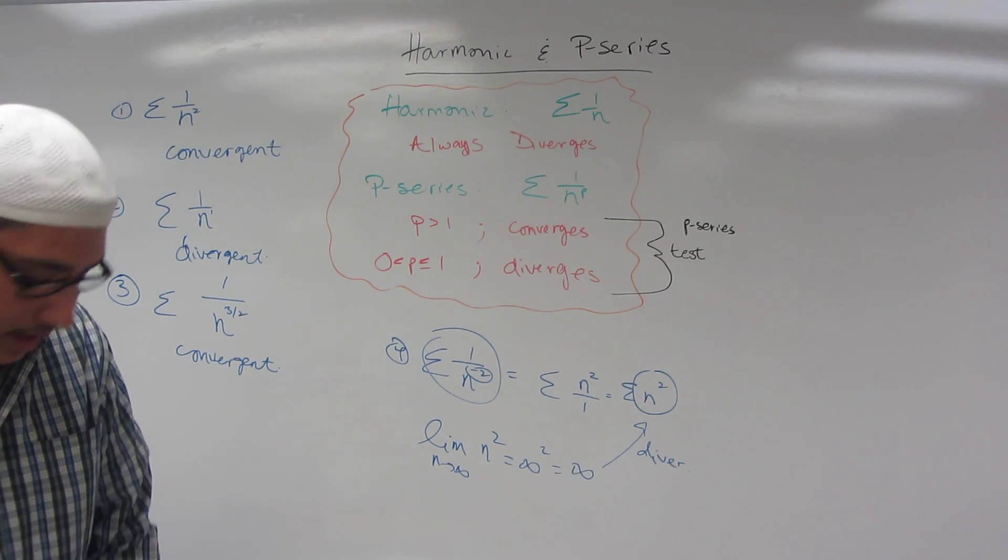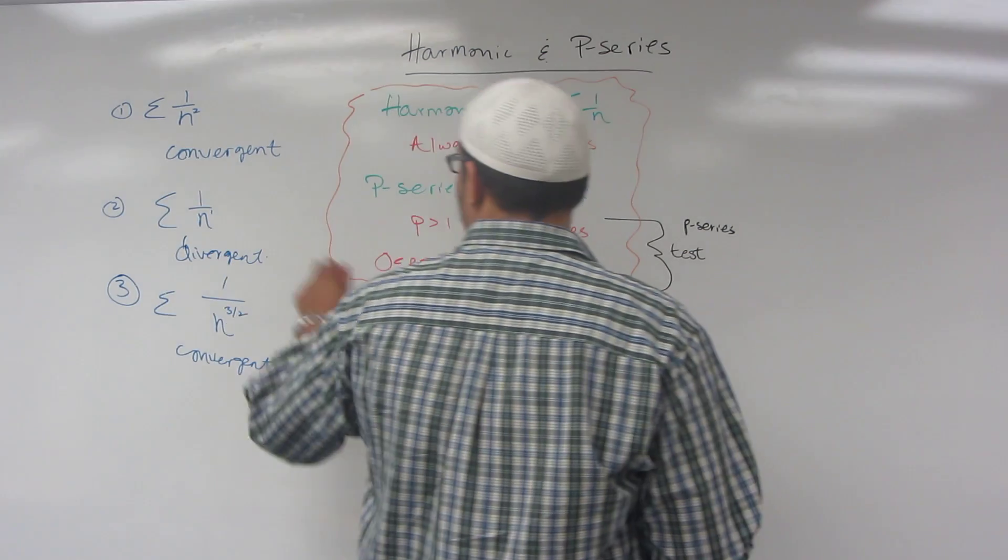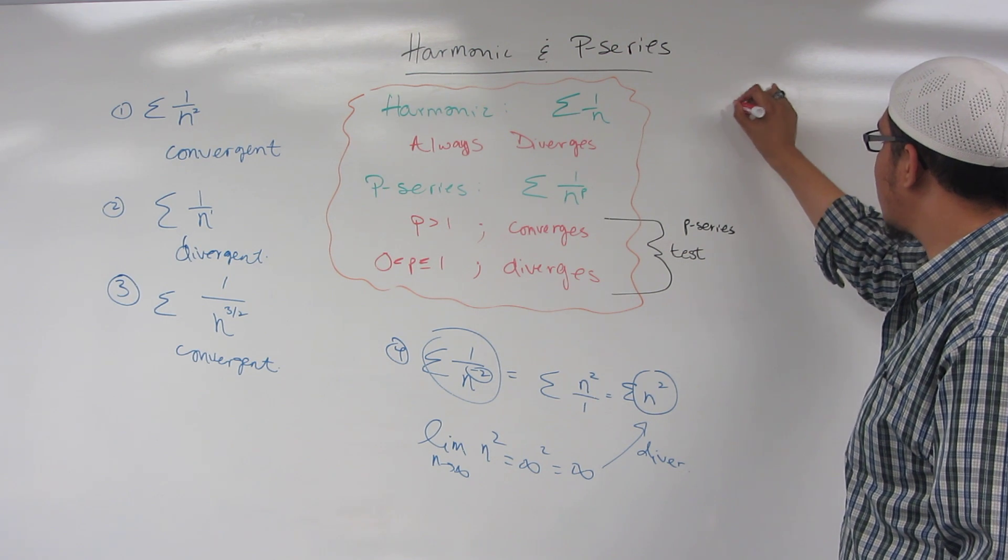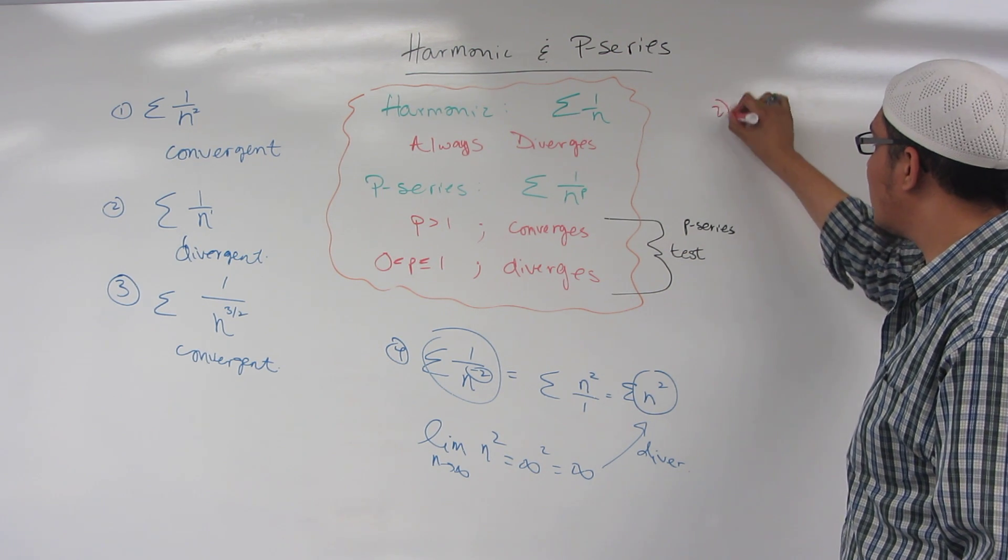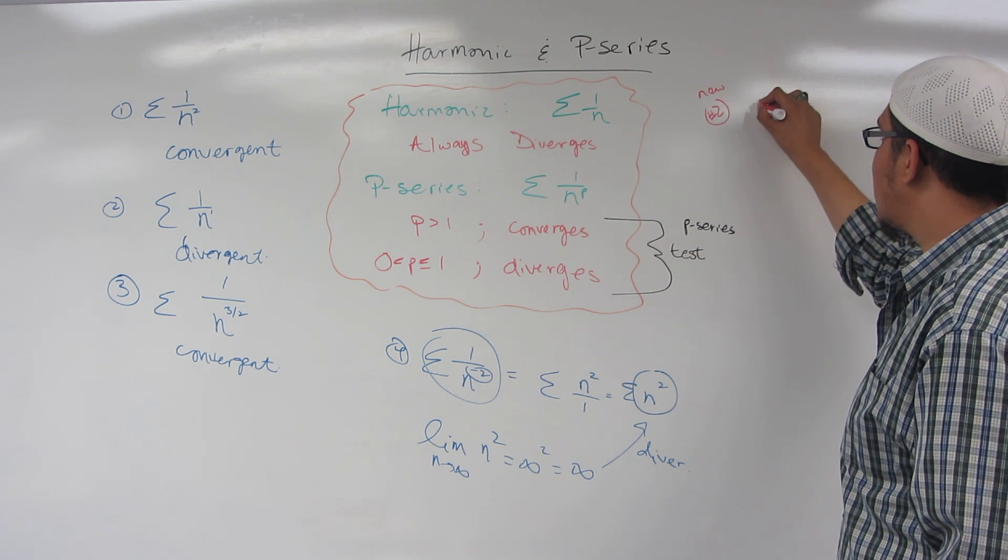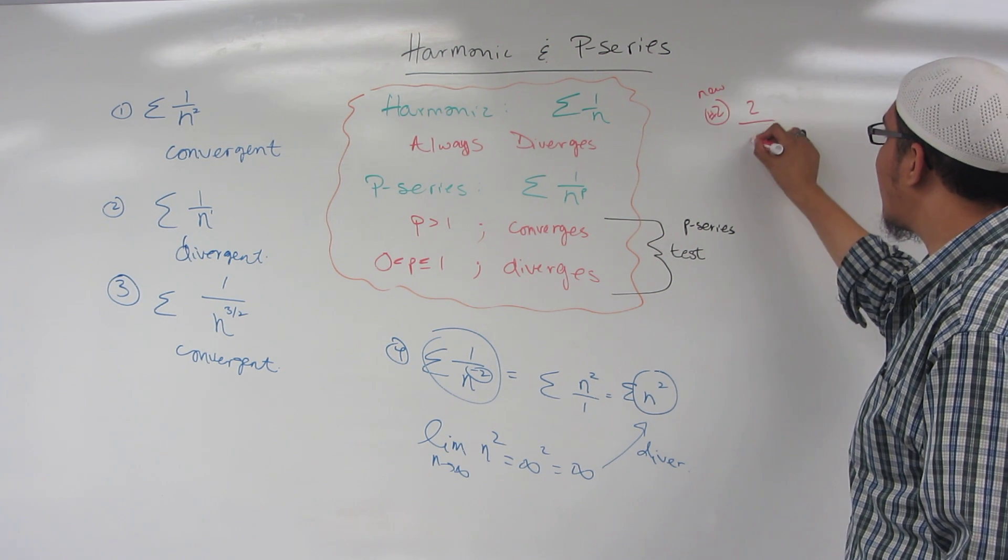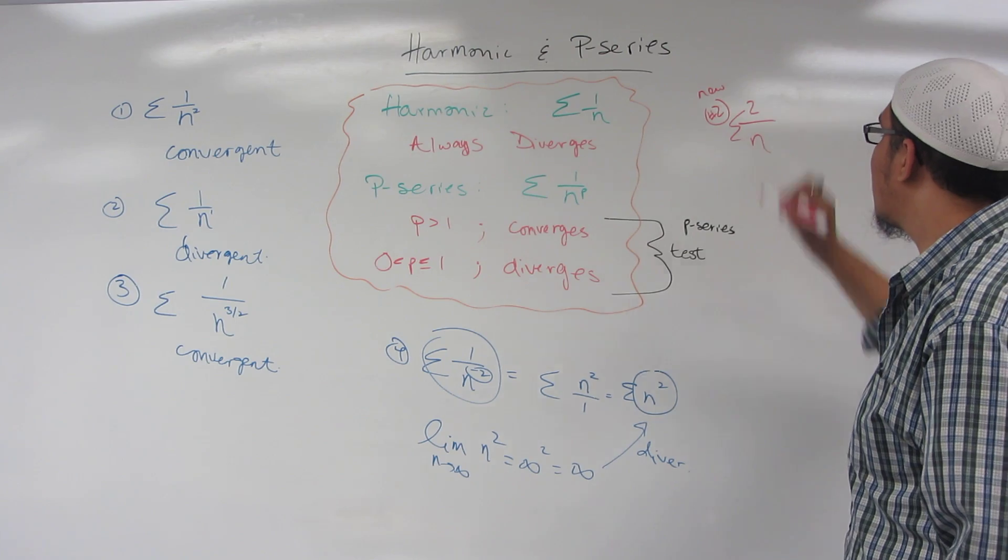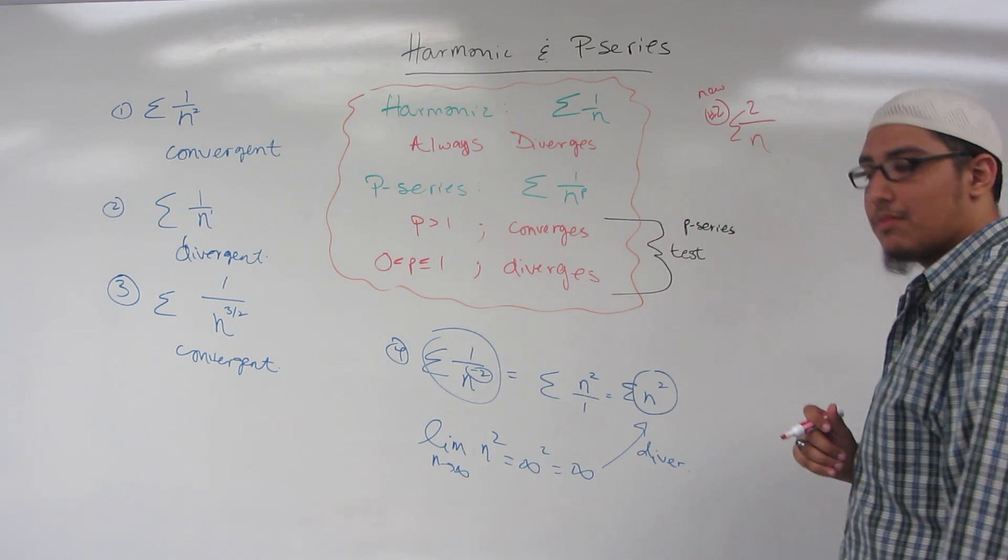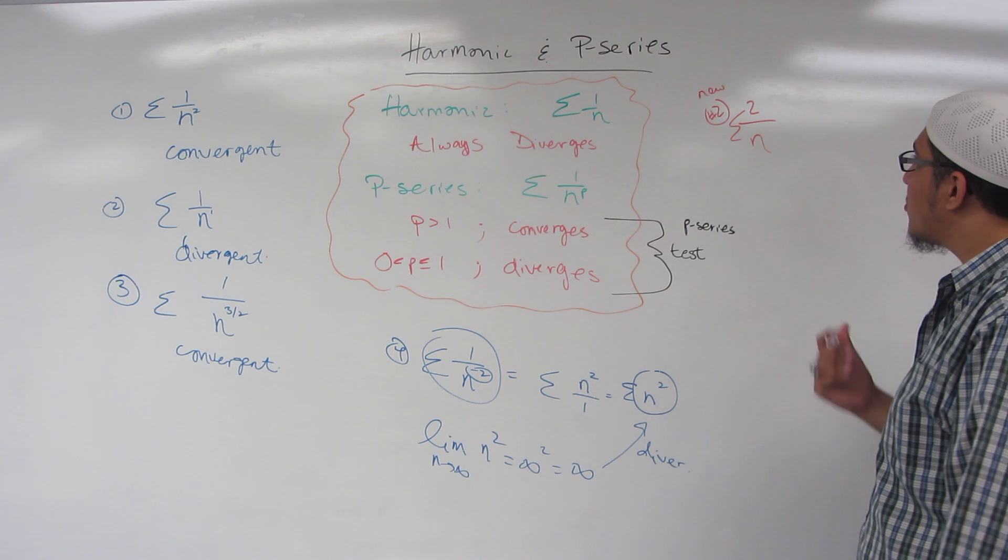Well, this looks like the harmonic series except that there's no one on top, on the numerator. So we can simplify this. We can simply say two times sigma one over n.